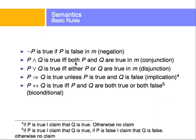Other rules: the conjunction P and Q — written with a hat symbol — is true only if both P and Q are true in the model. The disjunction P or Q is true if either P or Q is true. P implies Q is true always except when P is true and Q is false.